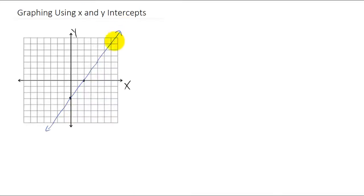If we have a line that looks like this, the x-intercept of this graph is the point right where the line intersects with the x-axis. That's the point (a, 0). You might realize that no matter where this graph intersected the x-axis, the y value of the x-intercept would be zero. This graph also has a y-intercept, and in this case it is (0, negative three). Likewise, no matter where this graph intersected with the y-axis, the x value is always going to be zero.